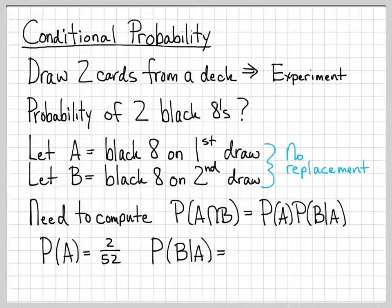What about P of B given A? So given that I've already drawn a black eight on my first draw, what's the probability of drawing a black eight on my second draw? Well, since I've already drawn one card out of the deck, I no longer have 52 cards, I just have 51.